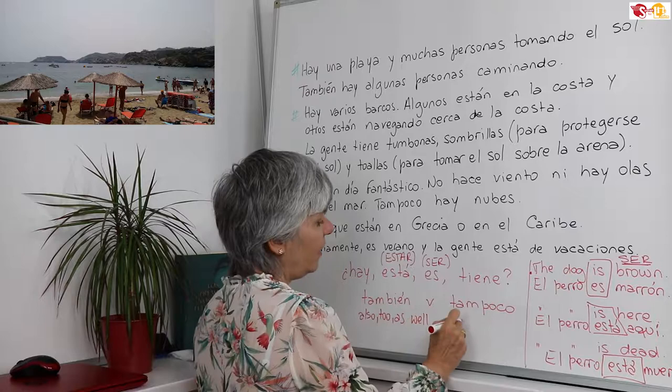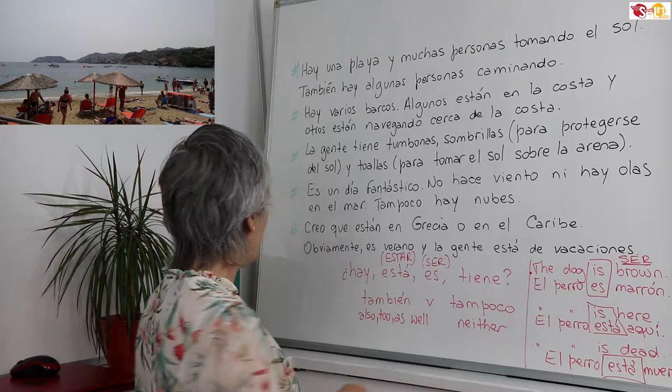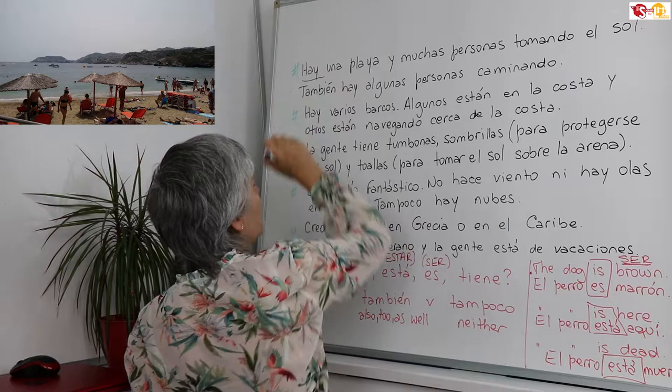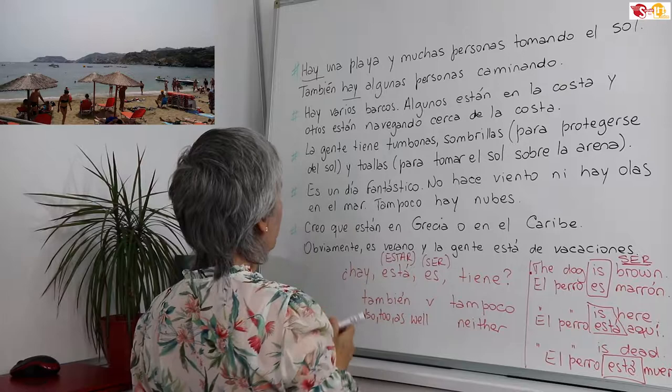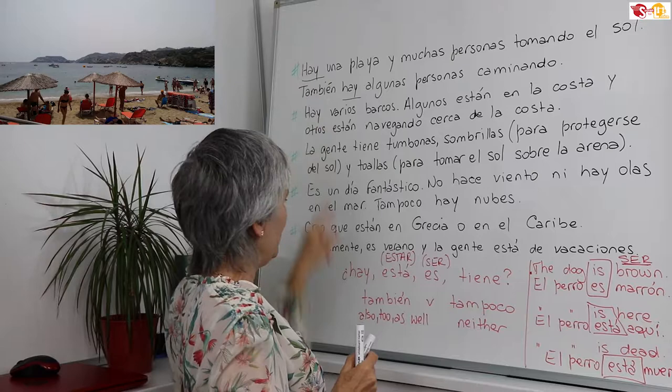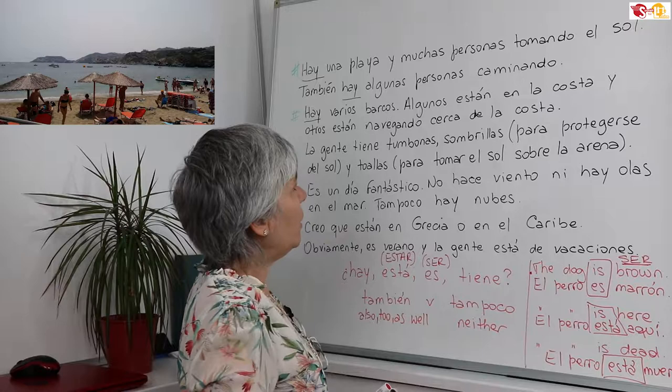Let's see our photo. Hay una playa y muchas personas tomando el sol. También hay algunas personas caminando — there is a beach and many people sunbathing, and there are also some people walking. Hay varios barcos — there are several boats. Algunos están en la costa y otros están navegando cerca de la costa — some are on the shore and others are sailing near the shore.